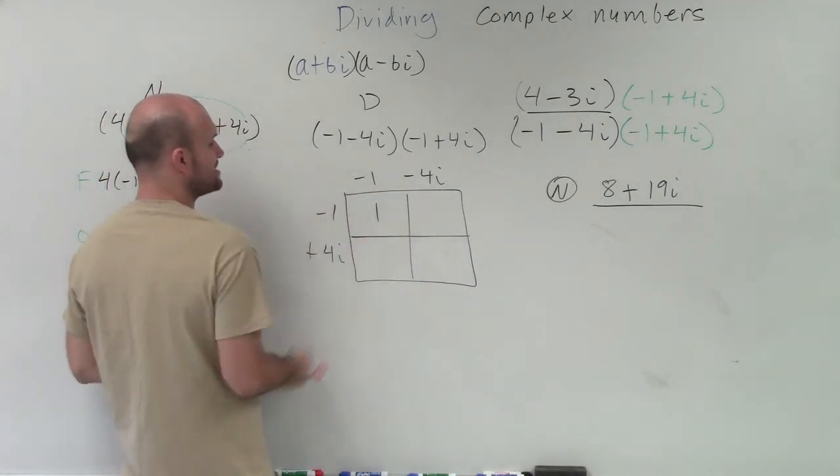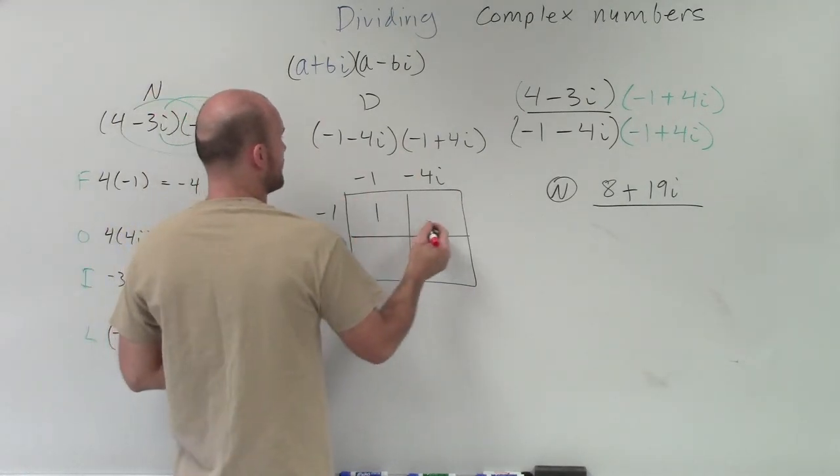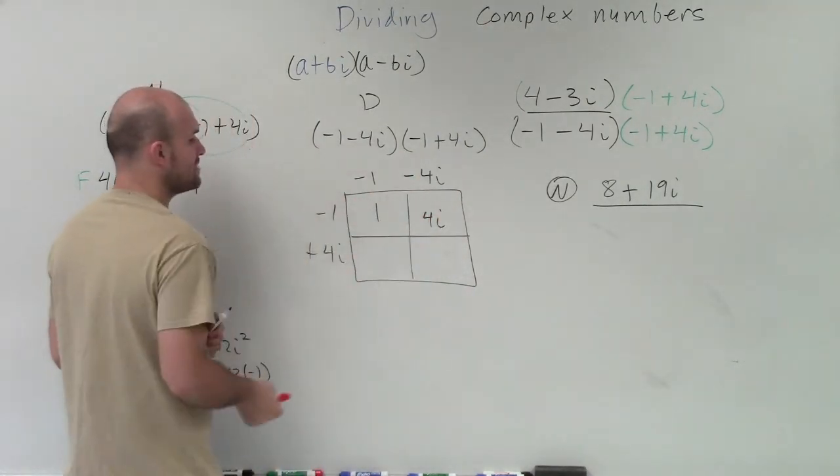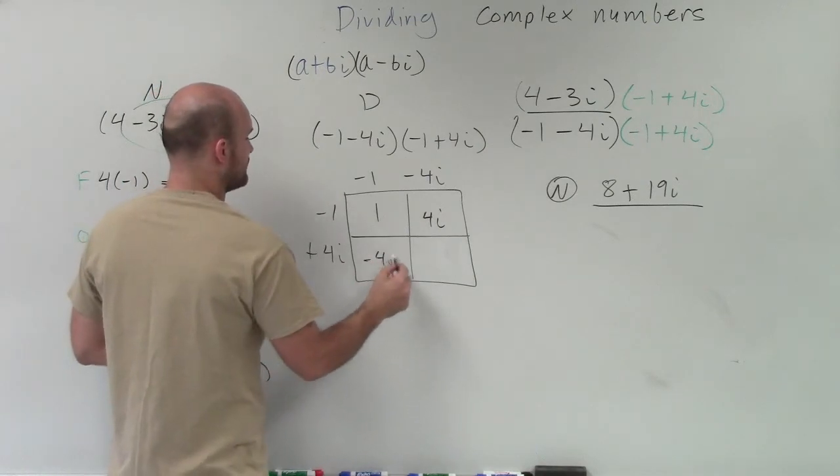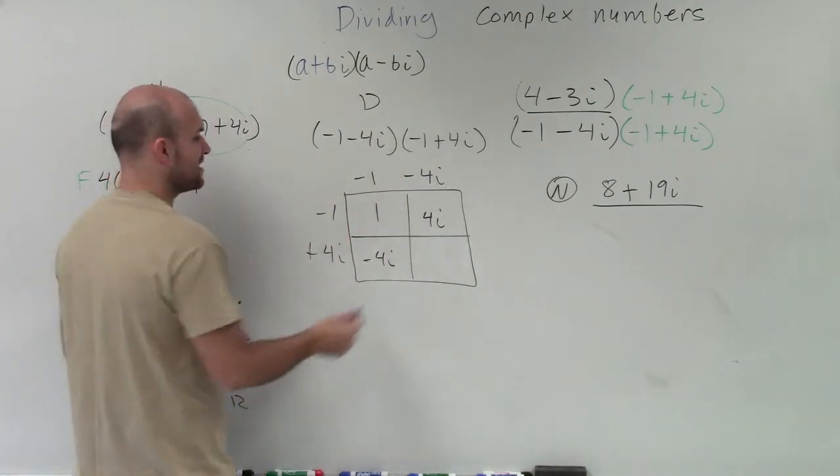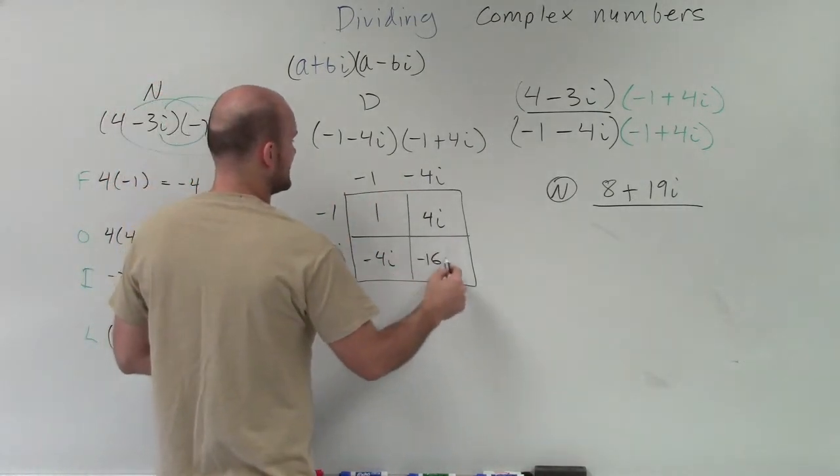Negative 1 times negative 1 is positive 1. Negative 1 times negative 4i is a positive 4i. Negative 1 times 4i is going to be a negative 4i. And 4i times negative 4i is a negative 16i squared.